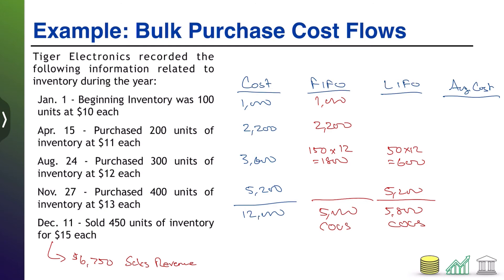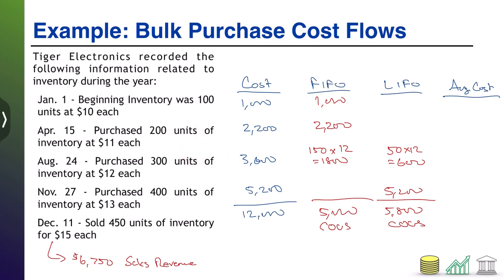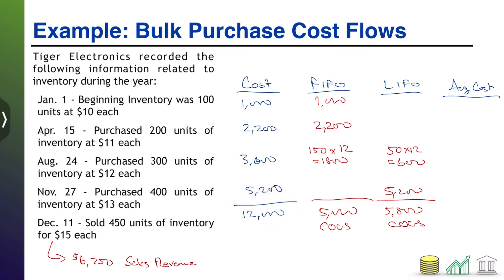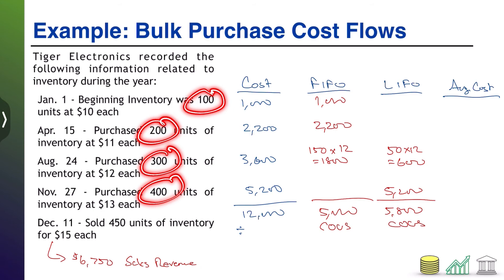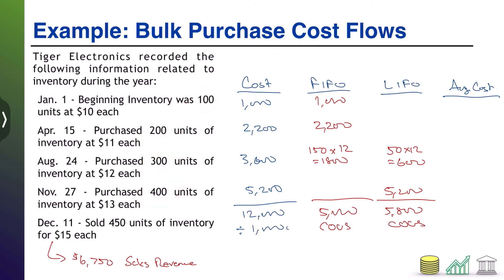Average cost is a little different — we're not pulling from one direction or the other. We calculate the average price paid for all units and treat them all equally. We paid a total of $12,000 for 1,000 total units (100 + 200 + 300 + 400), so on average we paid $12 per unit. Under average cost, we simply say we sold 450 units at $12 each.